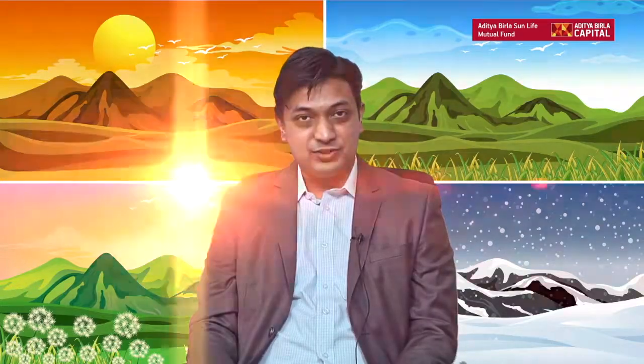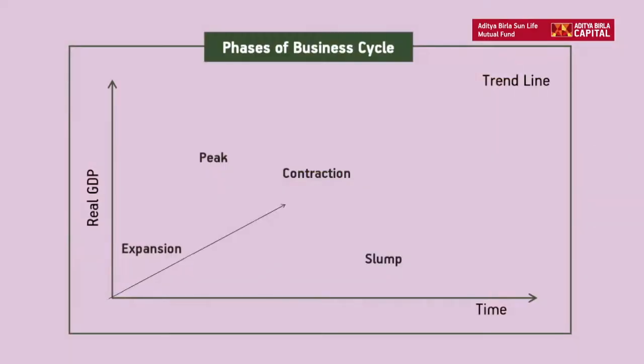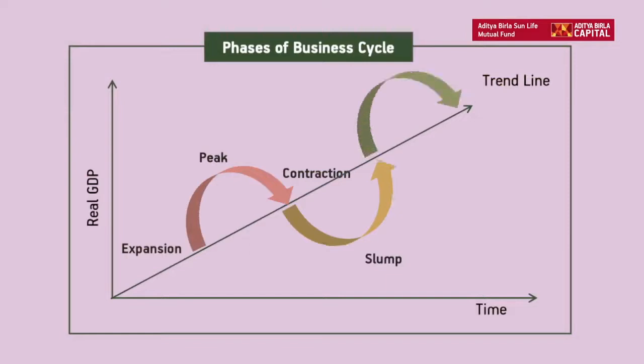In terms of business cycles, one can think about that variability multiplied by at least five times. Because of the variability, there are opportunities by investing in specific sectors which benefit from different phases of the business cycle. So that's what our strategy is based on — take advantage of different phases of the business cycle.